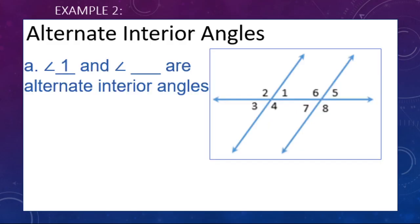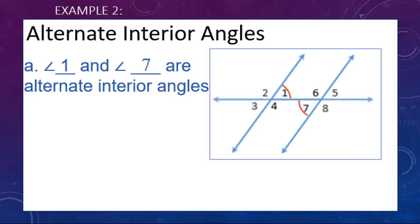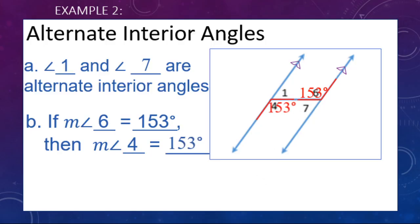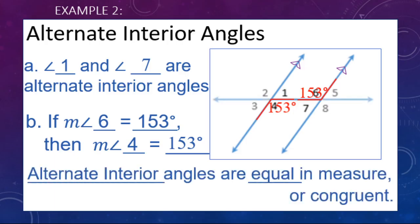Examples of alternate interior angles: angle one and angle blank are alternate interior angles. There's our transversal; we ignore the exterior angles and look for the interior angle alternate to angle one — that's angle seven. If angle six is 153 degrees, angle four is also 153 degrees, because alternate interior angles are equal in measure — they are congruent.